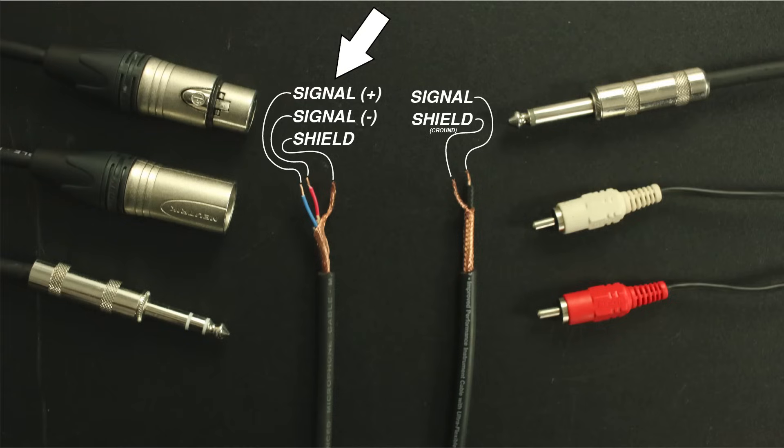Let's expose the wires on these cables to get a closer look at what's going on inside. The XLR and ¼ inch TRS cables both contain a shield, a positive, and a negative. The ¼ inch TS and RCA cables each have a signal wire and a shield or ground. The construction of these cables is important to understand why the first two cables can support balanced connections and the second two cables cannot.